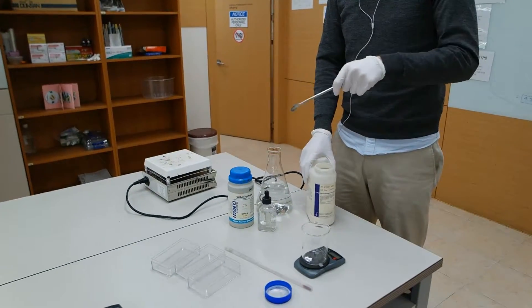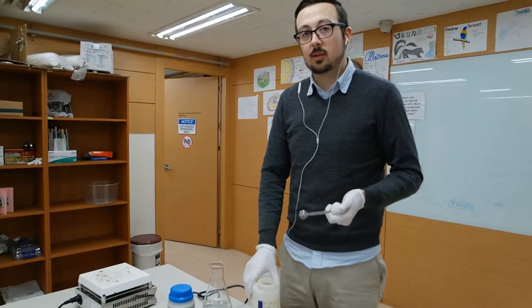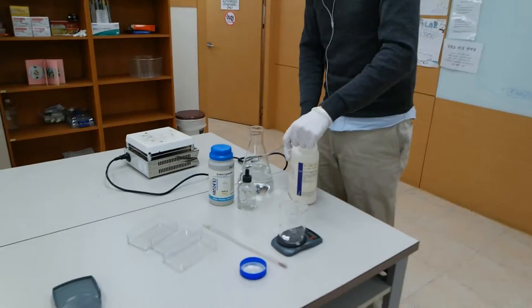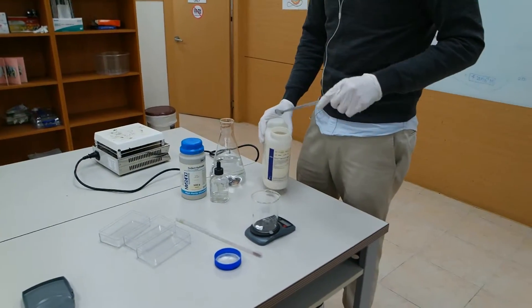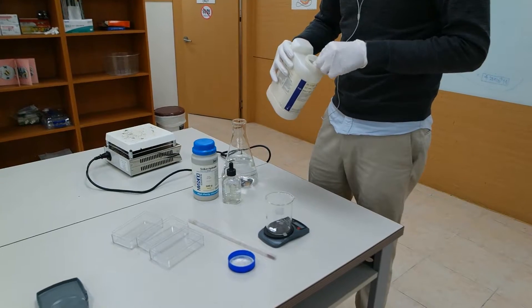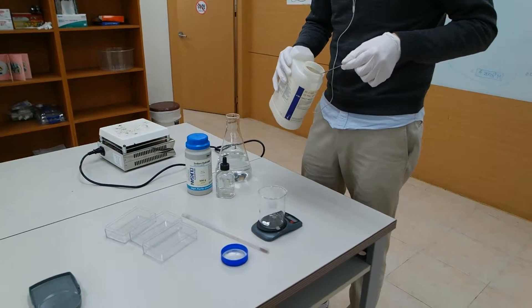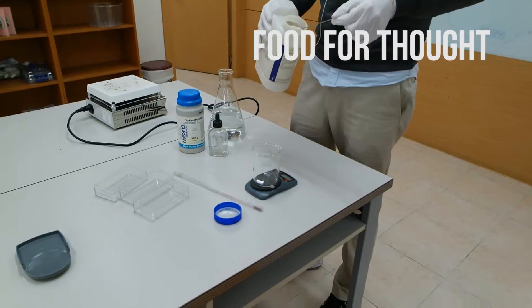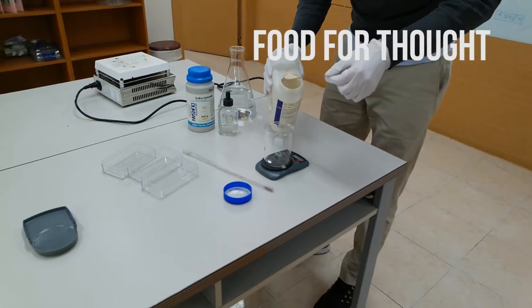Then we're gonna submerge our agar in an acidic solution and time it to make it change color. So we're gonna use the indicator as a color changer, and hopefully observe how larger blocks take longer to diffuse to the center. So their volume is greater compared to the surface area as well.